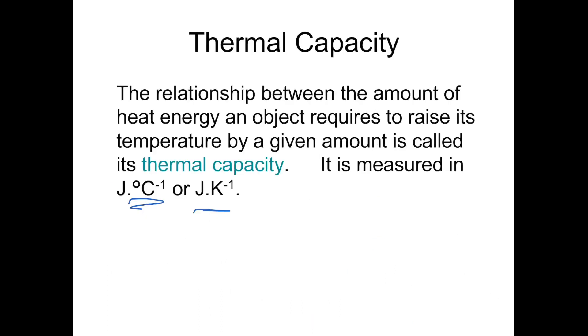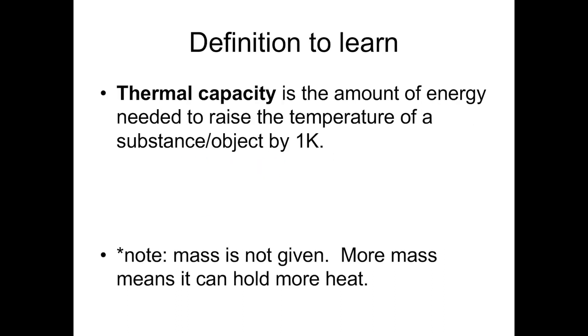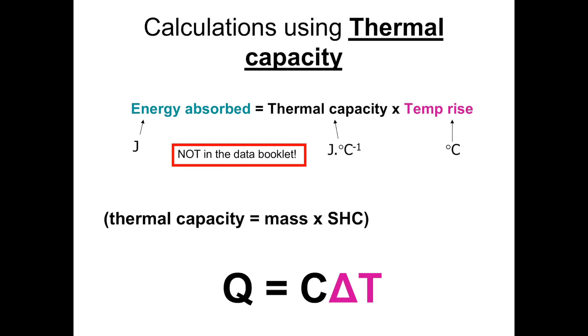Thermal capacity. Careful. Different from specific heat capacity. Thermal capacity. The relationship between the amount of energy an object requires to raise its temperature by a given amount is called its thermal capacity. It is measured in joules per degree Celsius or joules per Kelvin. Now, why is this similar? Why is it different? It's different in the sense that the larger the object, the harder it will be to raise the temperature by 1 degree or 1 Kelvin. In the sense that if you have a small cup of water or a big bucket of water, it's going to take a lot more energy to raise the temperature in the big bucket of water.